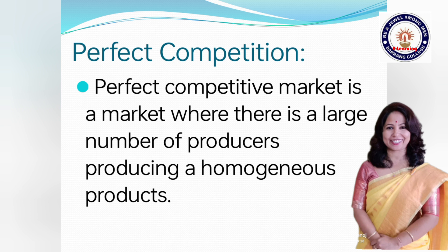First of all, we discuss about perfect competition or the perfect competitive market. Perfect competition is said to prevail where there is a large number of producers or firms producing a homogeneous product. The maximum output which an individual firm can produce is very small relative to the total demand of the industry product, so that a firm cannot affect the price by varying its supply of output.